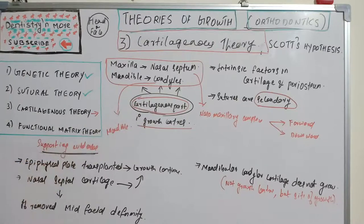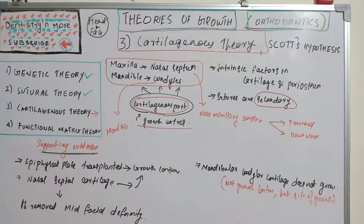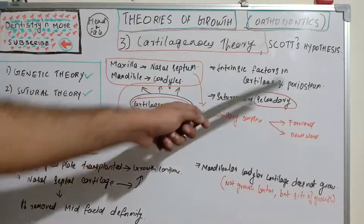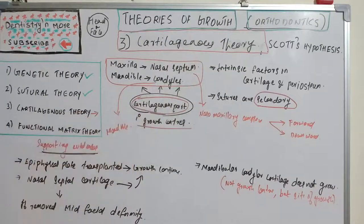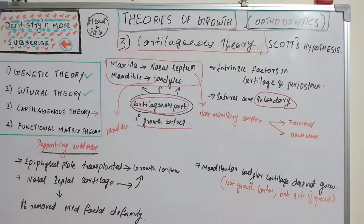The cartilaginous parts act as primary growth centers in the maxilla and mandible. In the maxilla, the cartilaginous part is the nasal septal cartilage; in the mandible, it is the condylar cartilage. These cartilages act as intrinsic factors in growth and development. Sutures, by contrast, act as secondary structures, merely responding to synchondrosis proliferation and local environmental factors.